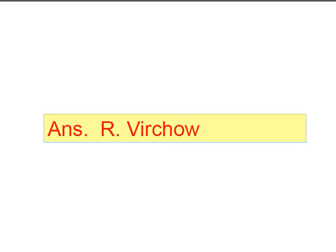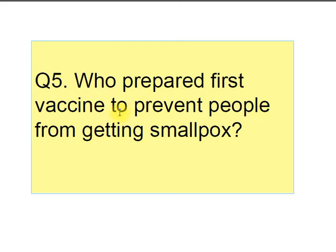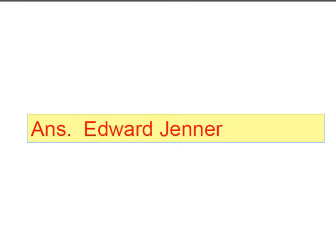Next question: who prepared the first vaccine to prevent people from getting smallpox? Answer: Edward Jenner. Edward Jenner prepared the vaccine for the deadly disease smallpox using material from the lesion of a cowpox. Smallpox is the disease which has been eradicated throughout the world.